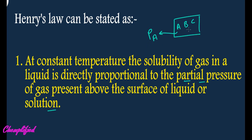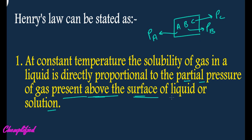Similarly, the partial pressure of B is the force exerted by the particles of gas B, written as PB, and for C it is PC. So total pressure will be PA plus PB plus PC. Partial pressure is of an individual gas which is present in the mixture. In our case, we are talking about the partial pressure of gas present above the surface of the liquid.